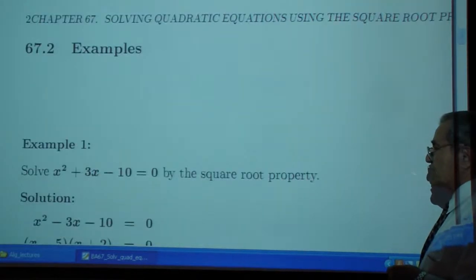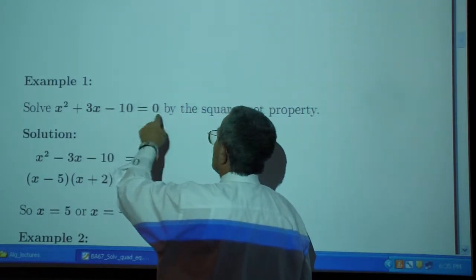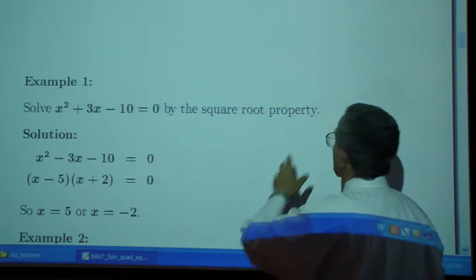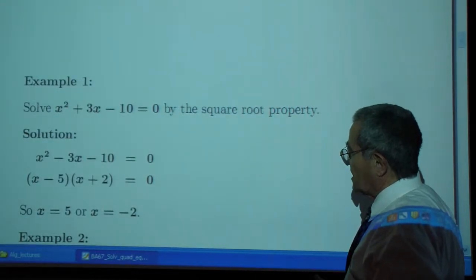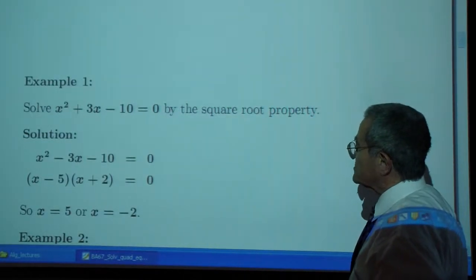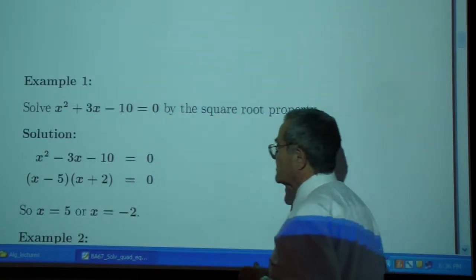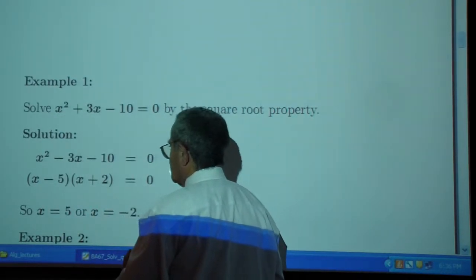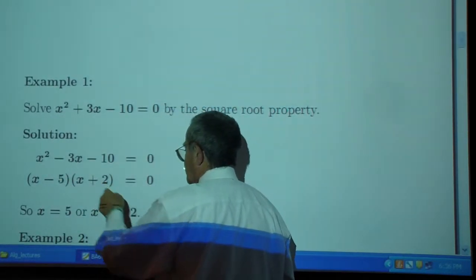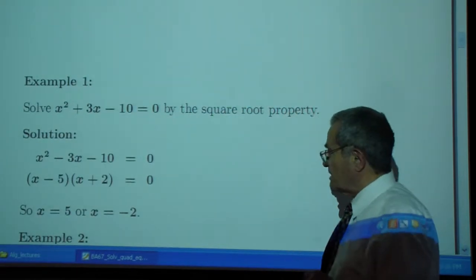Some examples. Example 1. You wanted to solve x squared plus 3x minus 10, which is equal to 0 by the square root property. Except that I have been doing factoring here, so I'm not doing the square root property here. I'm doing factoring. I factored this as x minus 5 times x plus 2, which means x is positive 5 or x is negative 2. Not the square root property yet.